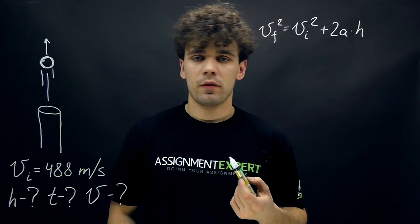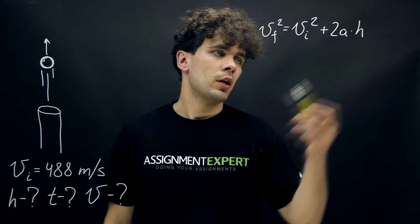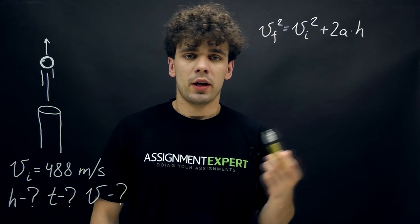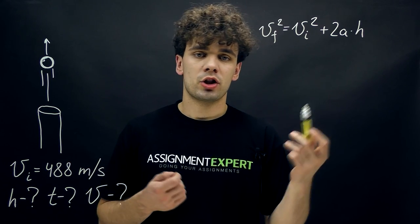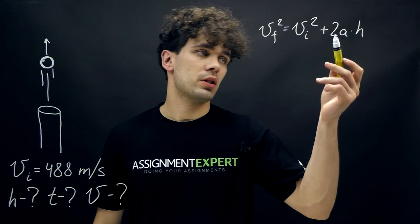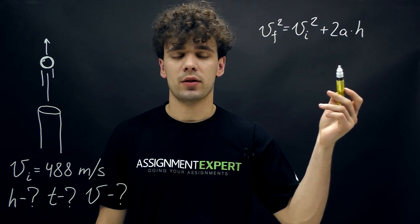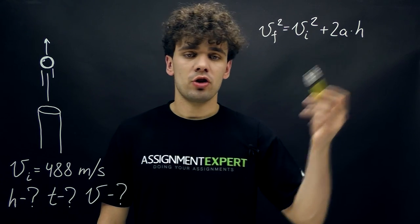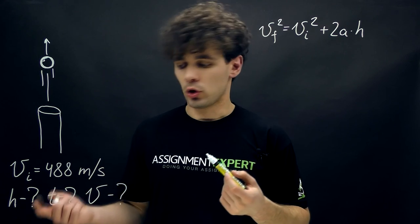Vi is the initial speed of the shell and it is given. a is the acceleration and in this case a is actually g, which is the free fall acceleration. So this is 9.8 meters per second squared, and h is the highest point that we're searching for.